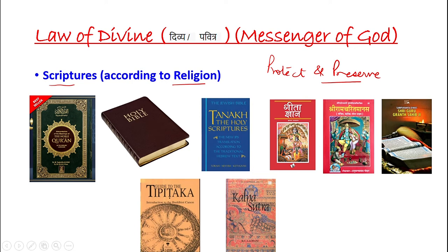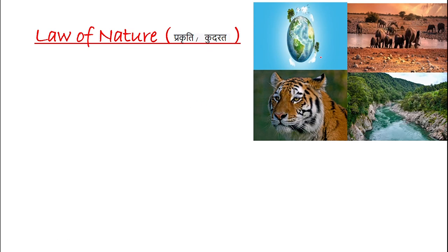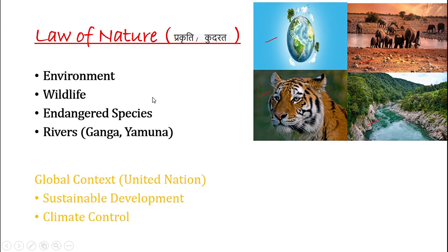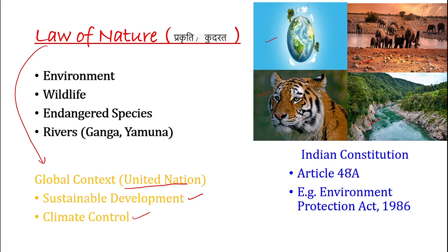The third classification according to Thomas Aquinas of natural law school is law of nature. Jab hum law of nature ki baat karte hain — earth, wildlife, rivers, aur endangered species — toh ismein environment, wildlife, endangered species, rivers aati hain. Aur global context mein law of nature ki applicability mein hum padhte hain United Nations ka sustainable development ka concept, climate control ka concept, aur bahut saari conventions aur treaties jo sign hoti rehti hain. Indian Constitution mein law of nature Article 48A mein reflect hota hai — example hai Environment Protection Act 1986.